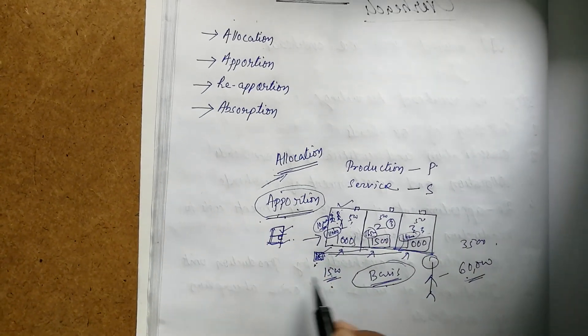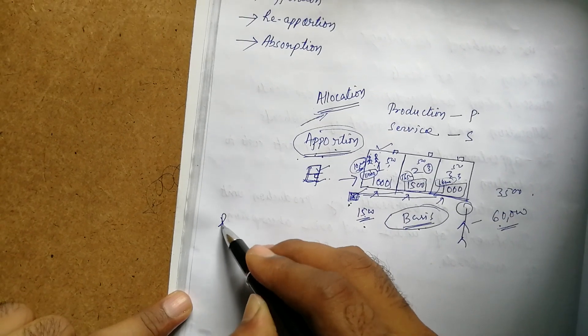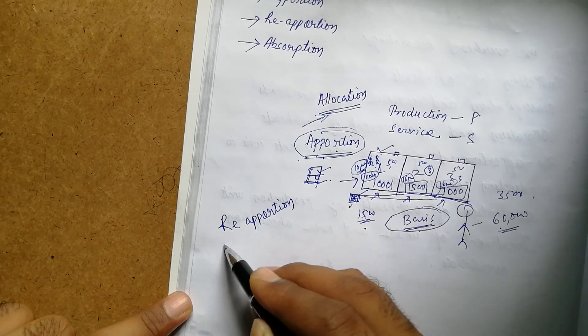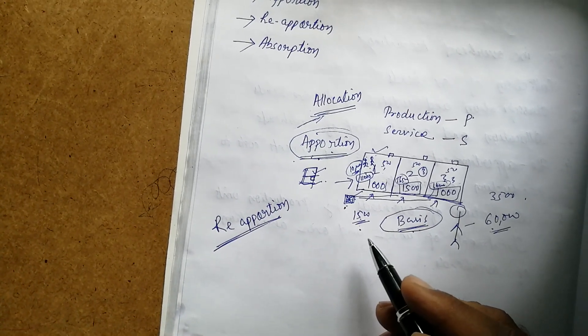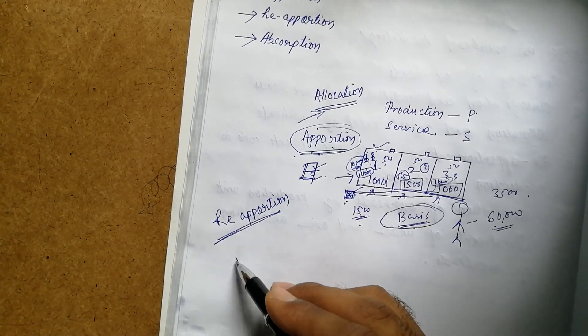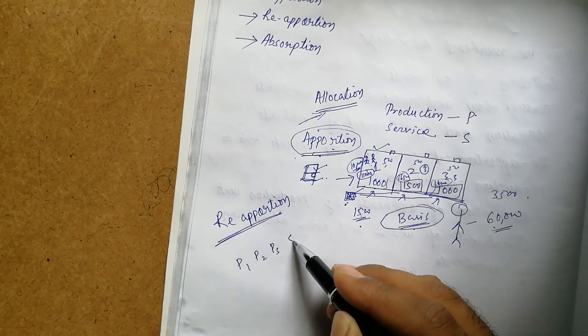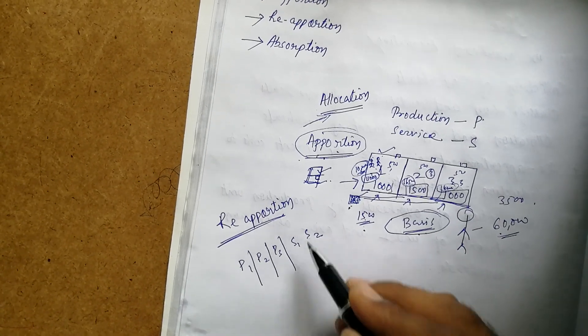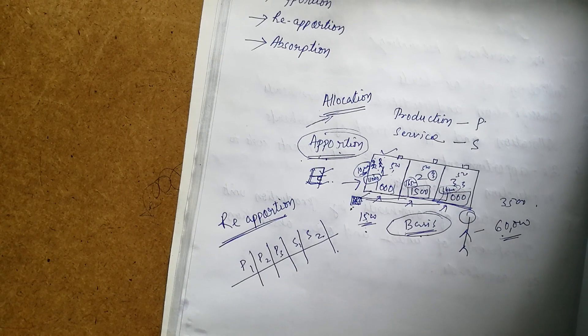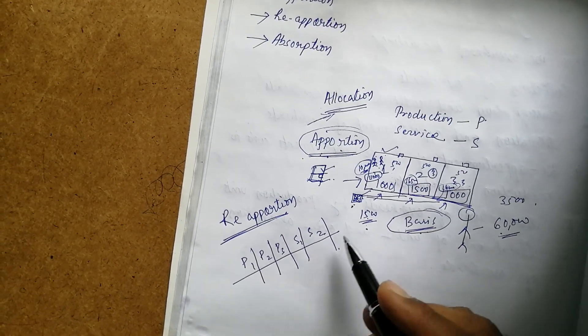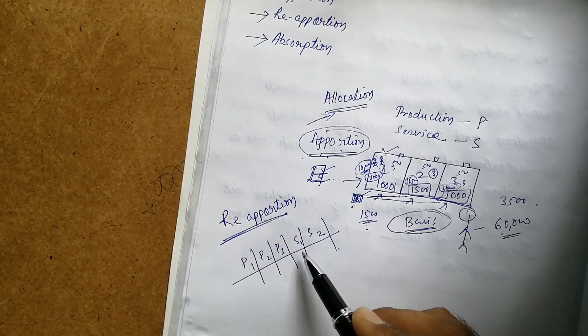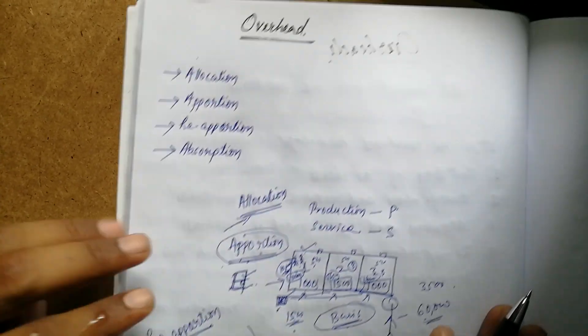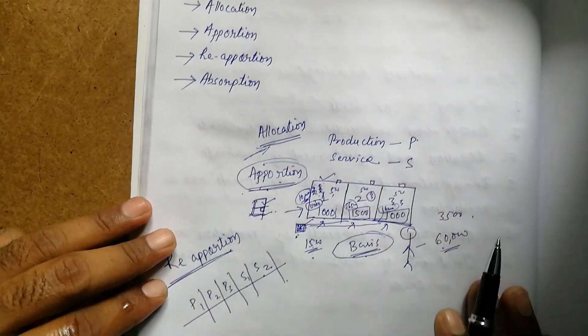Third is re-apportion. Re-apportion means what? Say we have P1, P2, P3—these are production departments—and S1, S2—these are service departments. In overheads, departments are divided into production and service.